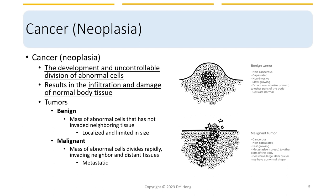Neoplasia causes the infiltration and damage of surrounding normal body tissue. When it happens in a solid organ, the group of abnormal cells is called a tumor. A benign tumor refers to a mass of abnormal cells that have not invaded neighboring tissues and is localized and limited in size. Sometimes it stays benign for a long time, but sometimes it can develop into a malignant state. A malignant tumor is a mass of abnormal cells that divide rapidly, invade neighboring tissues, and can affect distant tissues due to its metastatic property.